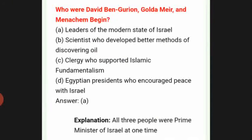Who were David Ben-Gurion, Golda Meir, and Menachem Begin? The answer is A: leaders of the modern state of Israel.